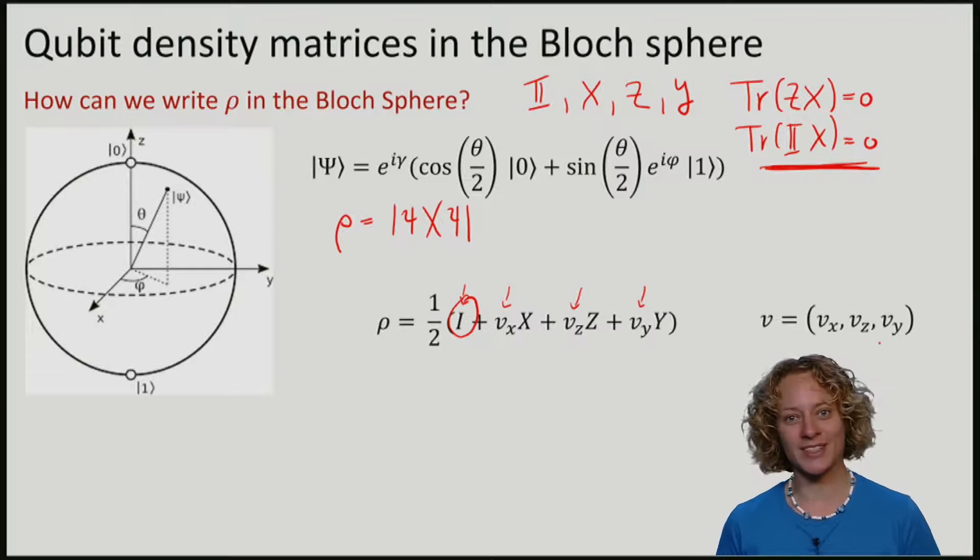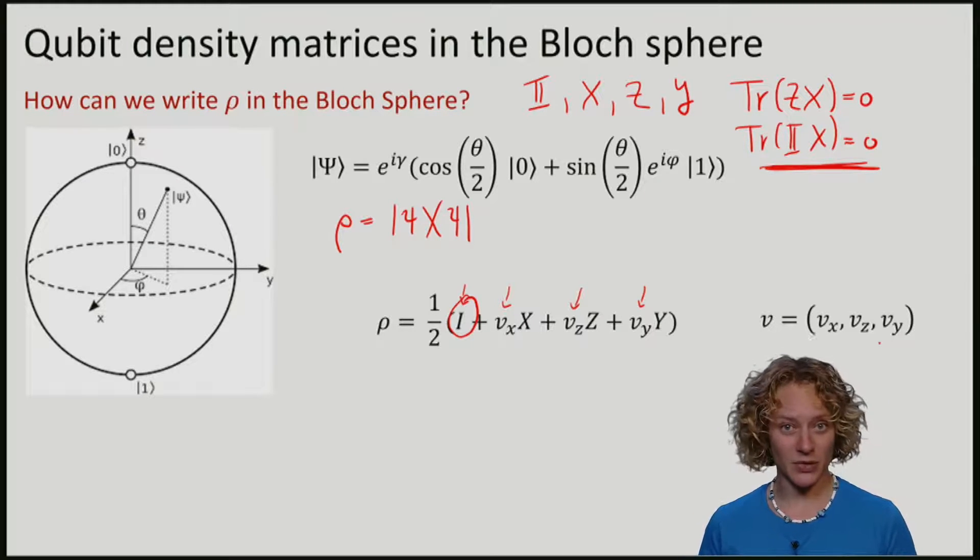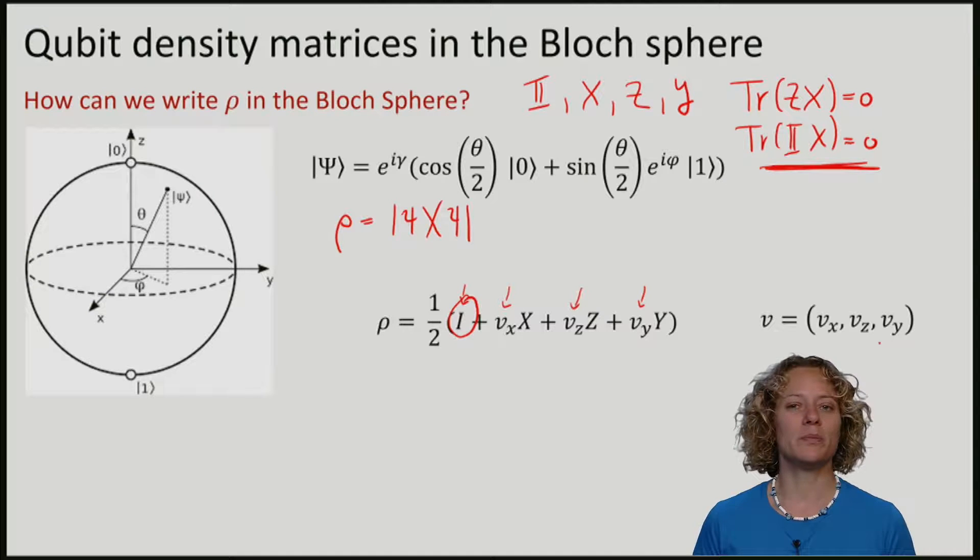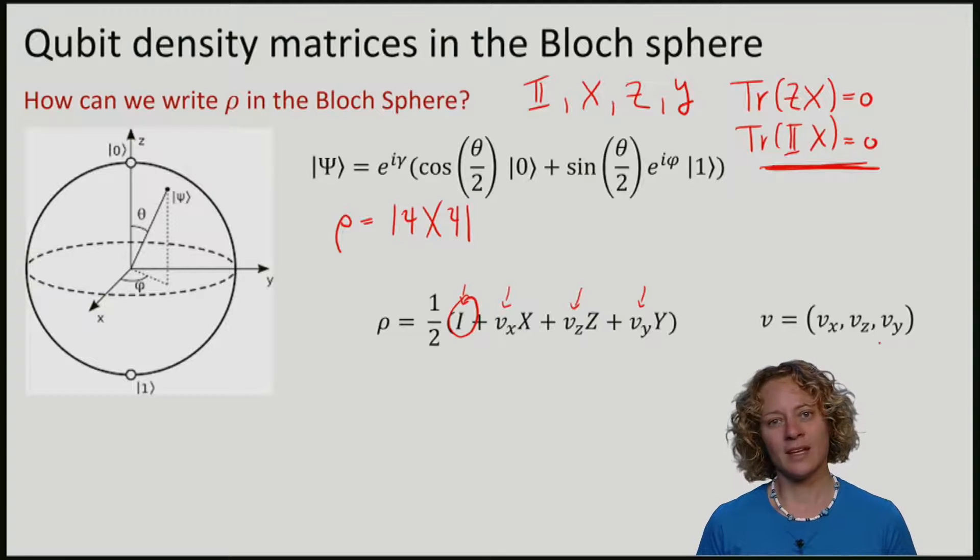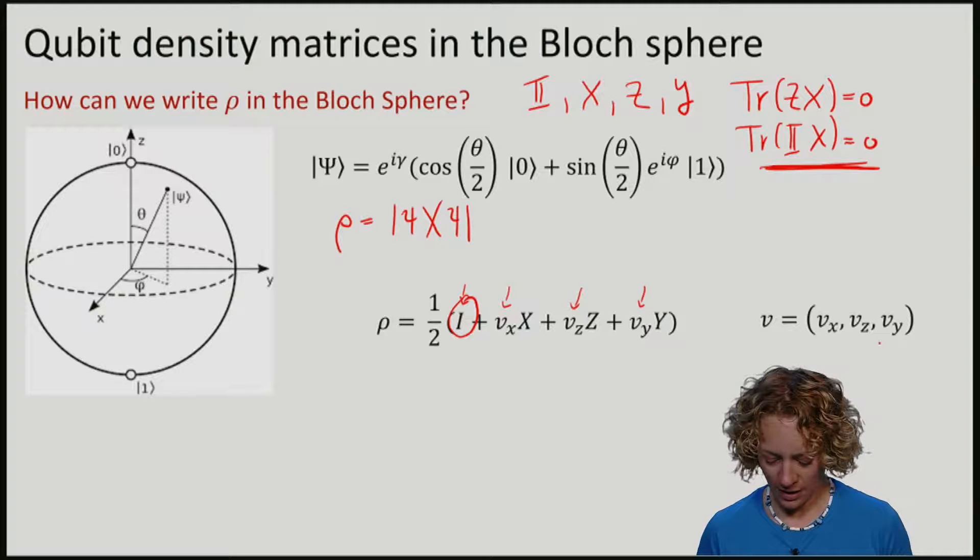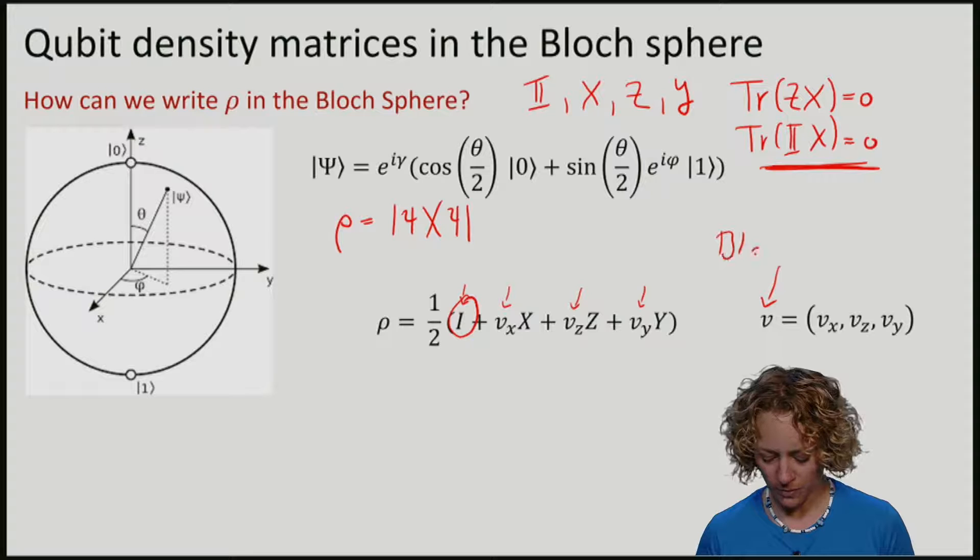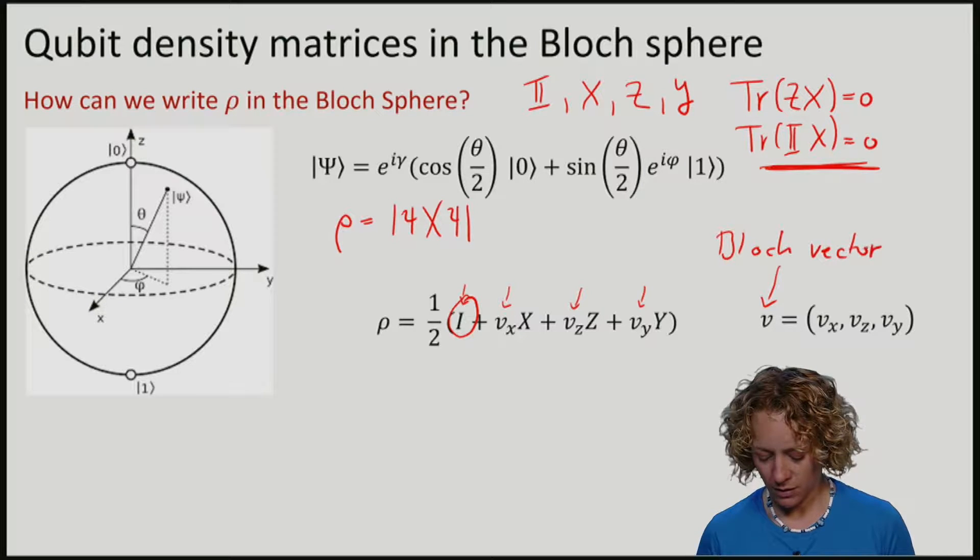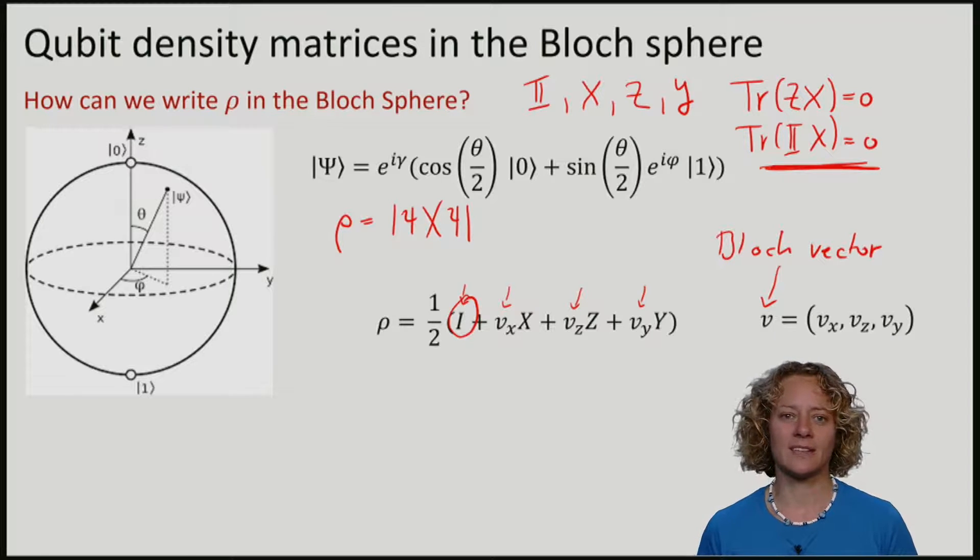I am not going to prove this here, but you can find in the lecture notes that rho being a density matrix is equivalent to this vector, which we will call the Bloch vector, having length at most 1.